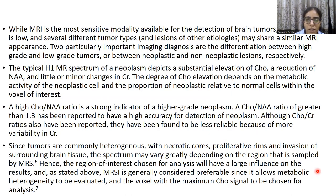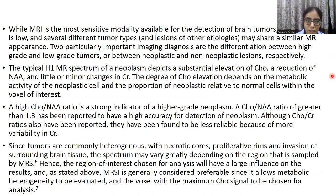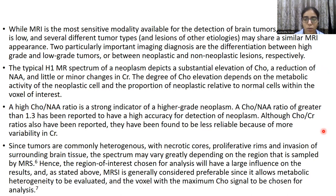Although MRI is a more sensitive modality for detection of brain tumors, its specificity is low, and several different types of tumors may share the same MRI appearance. The typical spectrum of a neoplasm depicts a substantial elevation of choline, reduction of NAA, and minor changes in creatinine. A high choline-to-NAA ratio is a strong indicator of a higher-grade neoplasm, and a ratio of more than 1.3 is reported to have high accuracy for detection of neoplasm. Since tumors are heterogeneous with necrotic cores, proliferative rims, and invasion of surrounding brain tissue, the spectrum can vary greatly depending on the region sampled, so the region of interest chosen has a large influence on results.